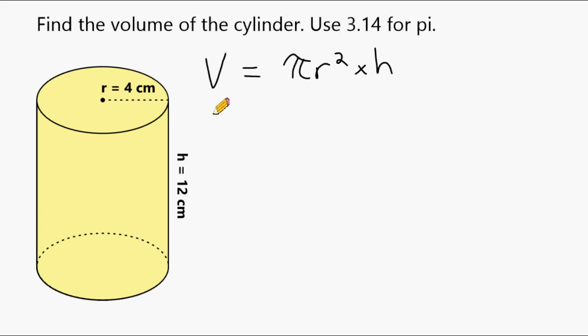So the first thing that we're going to do is substitute r or the radius with 4. Because in the diagram it says that our radius is equal to 4 centimeters and our height is equal to 12. So we're going to go ahead and substitute h with 12. And I'm not going to substitute pi for 3.14 just yet, but I like to do that as my last step.